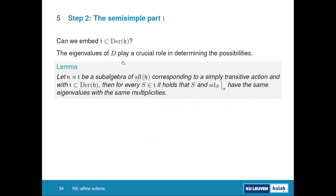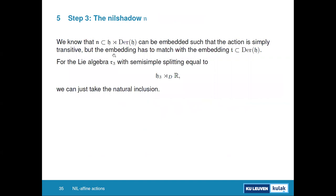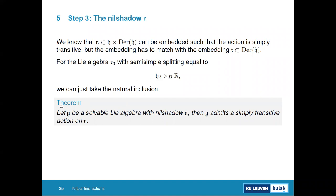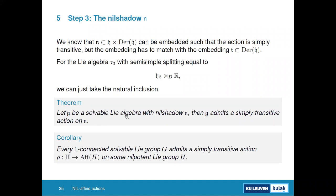Once you've embedded the semi-simple part, it remains to embed the nil shadow. When the nil shadow already equals H₃, you just take the inclusion map. This leads to the theorem that if the nil shadow equals the target group H, you always have a simply transitive action — giving a new proof that every solvable Lie group has at least one nil-affine action, on the Lie group corresponding to its nil shadow.